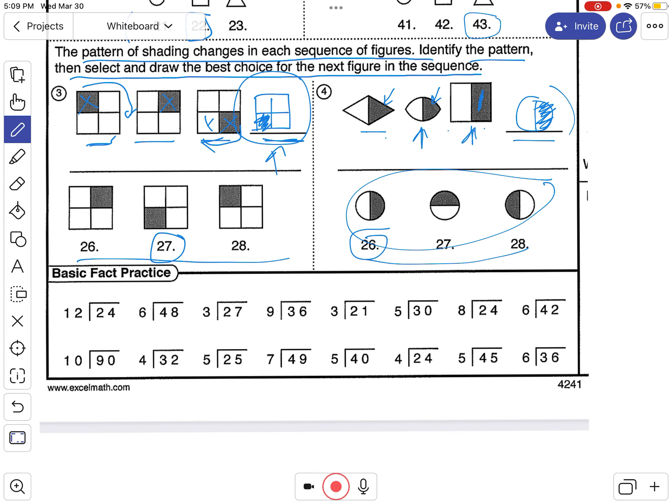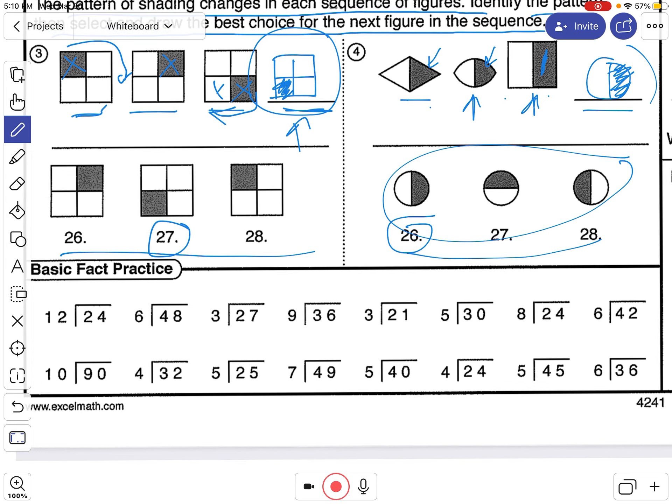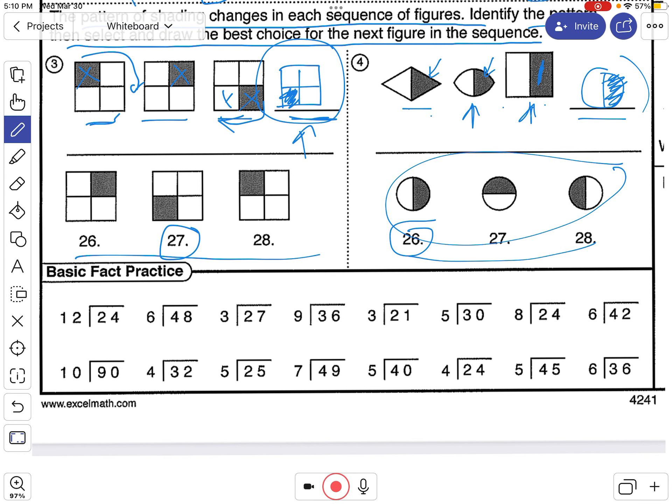All right. Pause the video. Do the division problems down at the bottom and then turn the video on when you've done all the questions, when you've answered them all. Here we go. 12 times 2. You should have already done this.